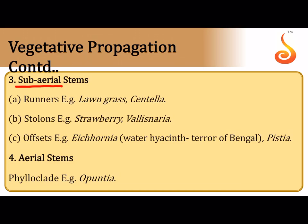Subarial stems grow along the surface of the ground, neither upright nor underground, like runners of grass and stolon. Offsets are like runners which grow horizontally on water without arching, mostly seen in aquatic plants like Eichhornia. Some aerial stems are also modified for reproduction, like phylloclade, which is an aerial stem that becomes green and succulent with multiple nodes and internodes, with leaves modified into spines, as in Opuntia or cactus.